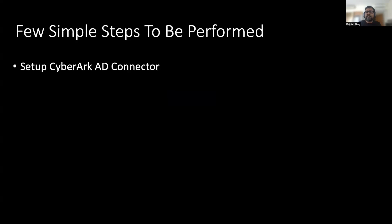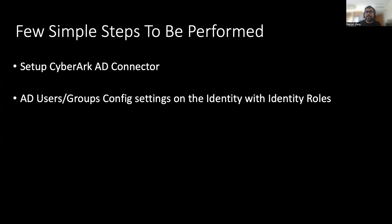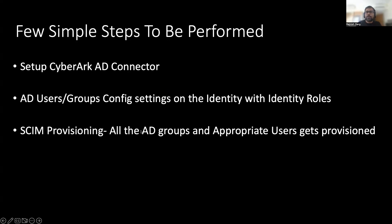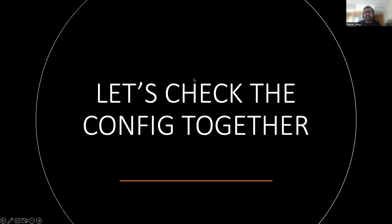These are the few simple steps we will be performing. The first step is you will be setting up a CyberArk AD connector — using this connector, CyberArk Identity will be able to communicate with your AD. Second, there will be some configuration pertaining to AD users and groups with the identity role. Then all your AD groups will automatically get provisioned to AWS SSO or IAM Identity Center. Last but not least, we will carry out a very simple test.